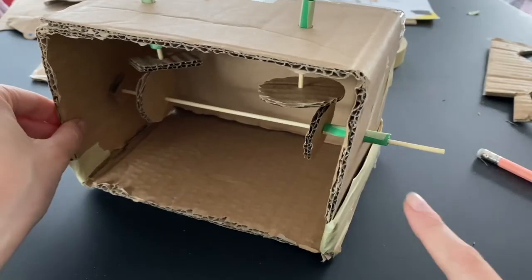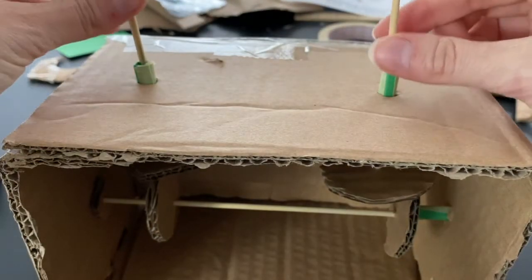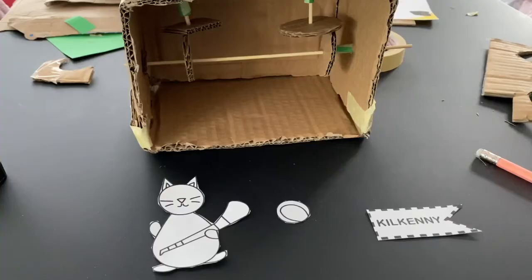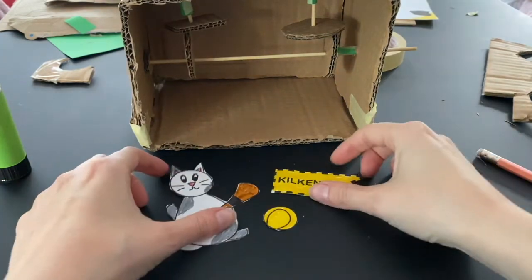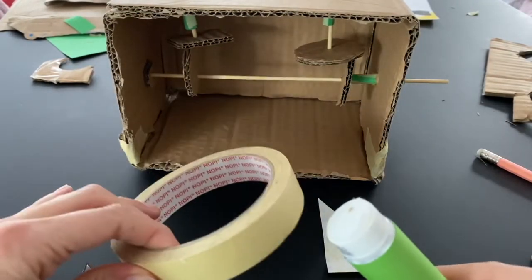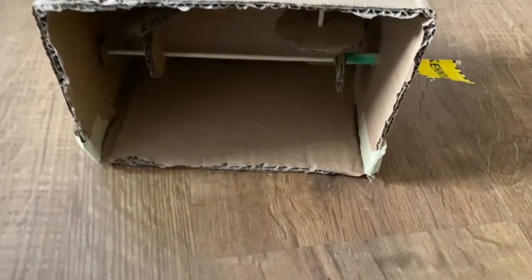Well done! Now the mechanism for your automata is ready. You can now customize it with characters and decorations, some colors. For this Kilkenny automata we decided to have a hurling cap and a ball and a flag as well. I use glue and tape to fix the characters and the flag.